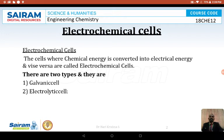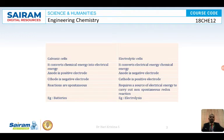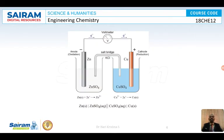So the galvanic cell example is the Daniel cell, and the electrolytic cell example is the electrolysis process. In this module and the next, we are going to deal only with galvanic cells. Reactions in galvanic cells are spontaneous, whereas electrolytic cells are non-spontaneous.